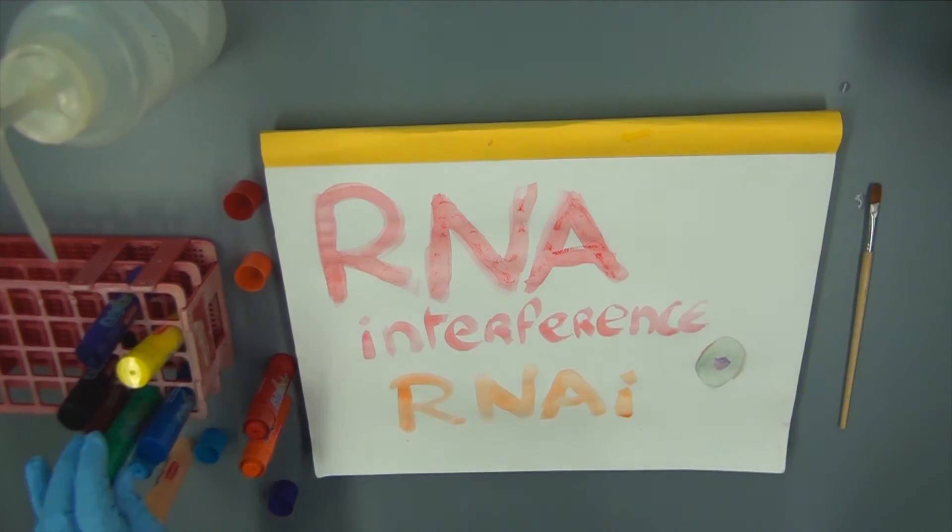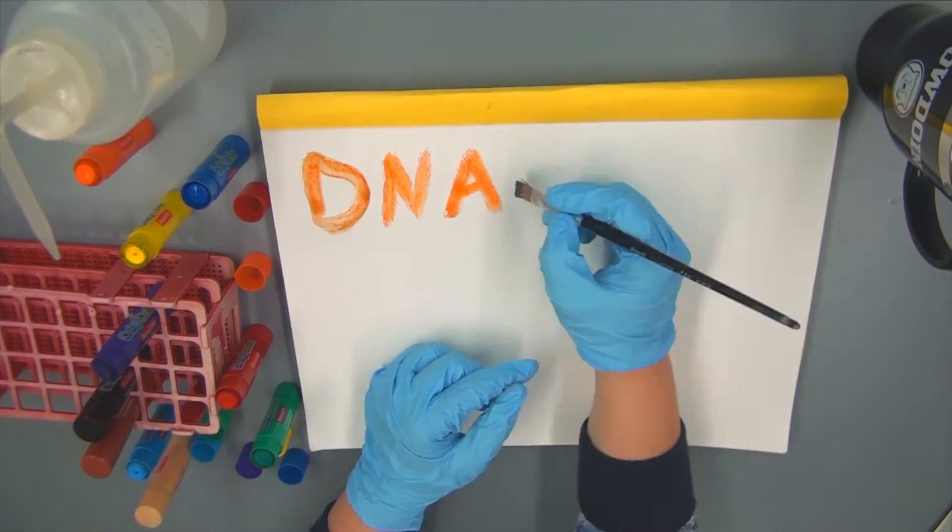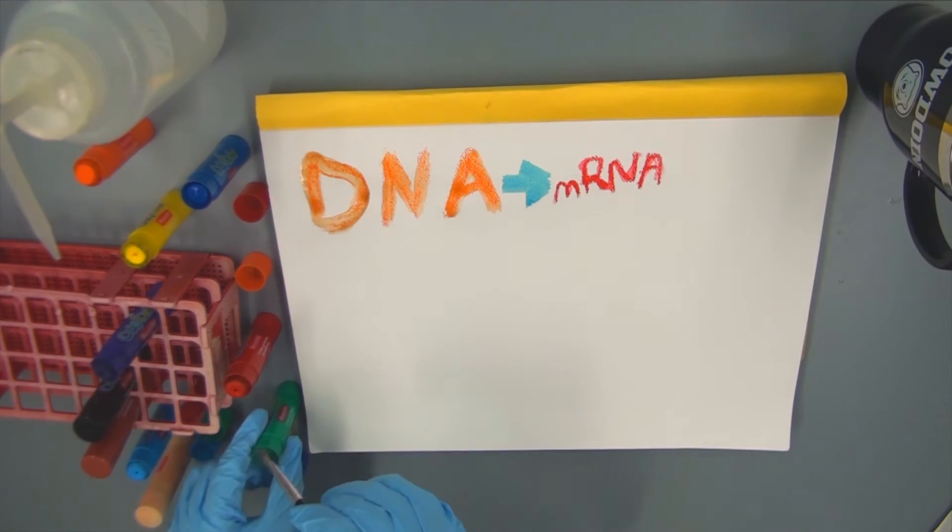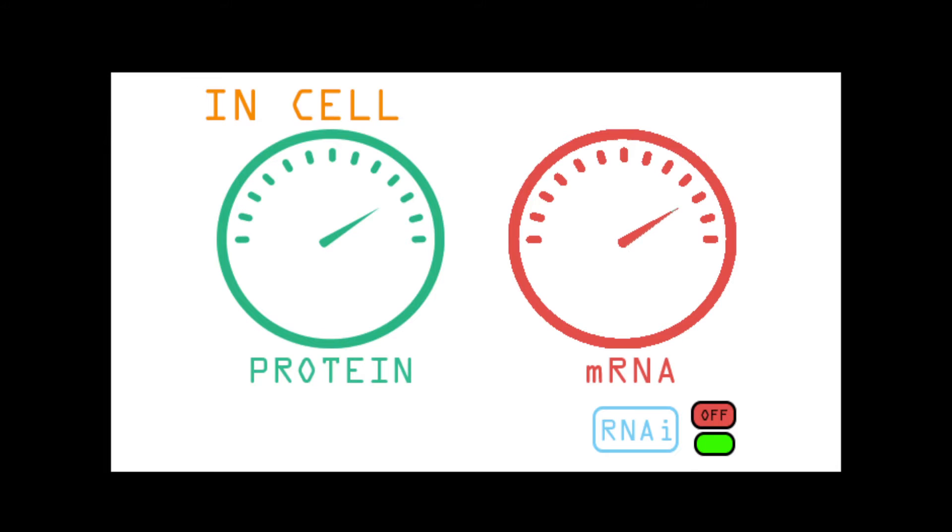In normal circumstances, mRNA would go on to be translated into a protein and act on the system. However, when RNA interference occurs, the protein cannot be expressed, as there is no corresponding mRNA to translate.